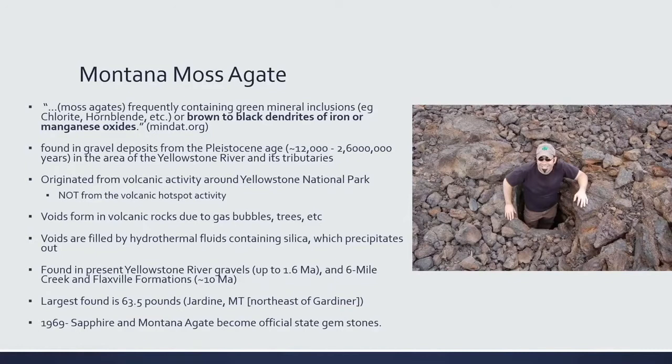The voids are filled with hydrothermal fluids containing silica, and that silica precipitates out to form agate. Montana agates can be found in the present Yellowstone River gravels, aged up to about 1.6 million years ago, and in the Six Mile Creek and Flaxville formations, which are about 10 million years old. The largest Montana moss agate ever found was 63.5 pounds, discovered in Jardine, Montana. In 1969, the sapphire and Montana agate became the official Montana state gemstones.